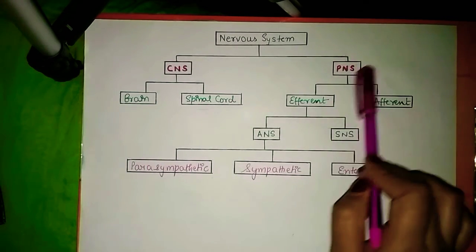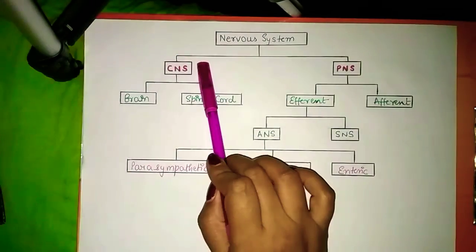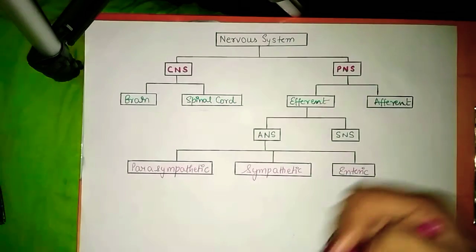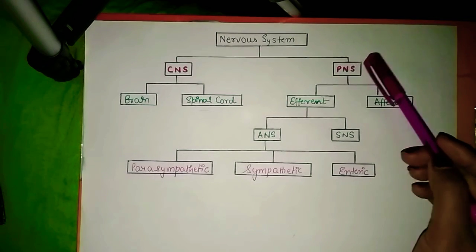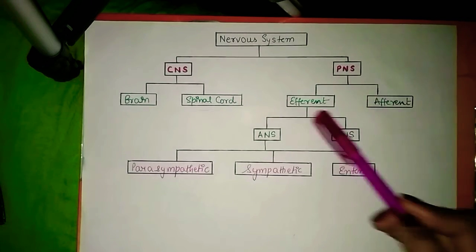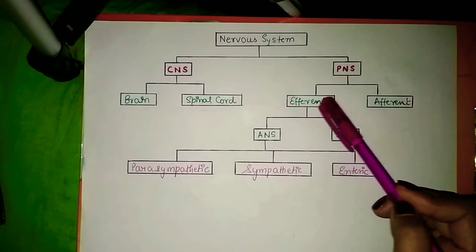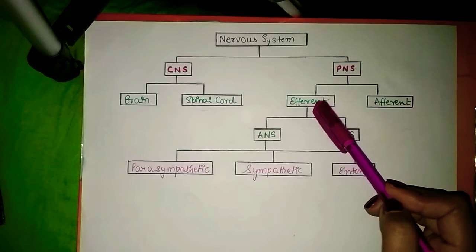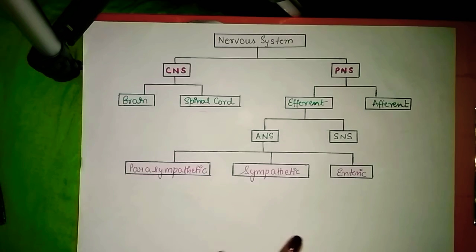The peripheral nervous system connects the central nervous system to every other part of the body. It has two types of nerves: efferent and afferent. Efferent refers to motor nerves and afferent refers to sensory nerves.